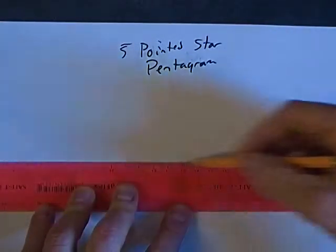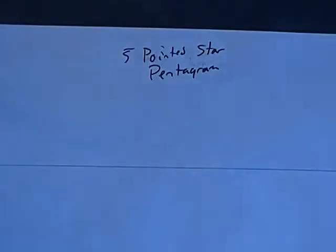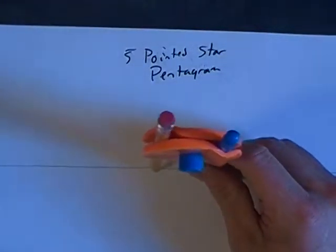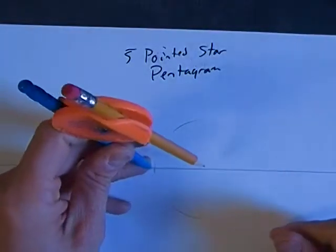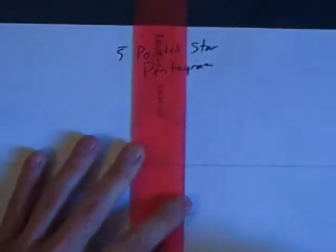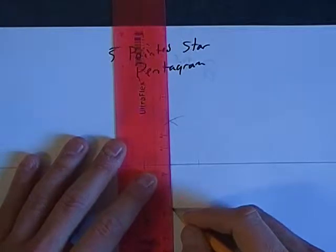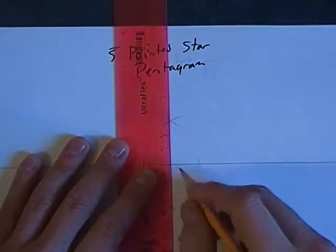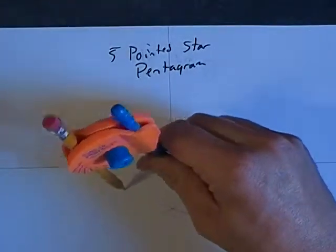We draw a horizontal line and bisect it to find a vertical line. But instead of making the vertical line go the whole way through the paper, we're only going to make it go above the horizontal line.